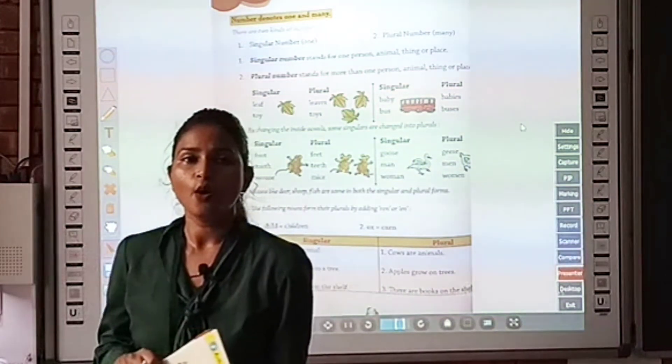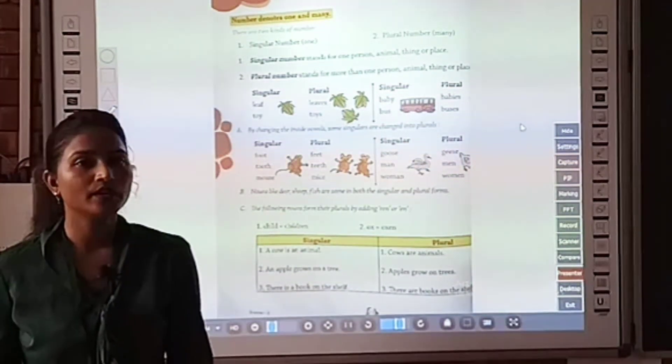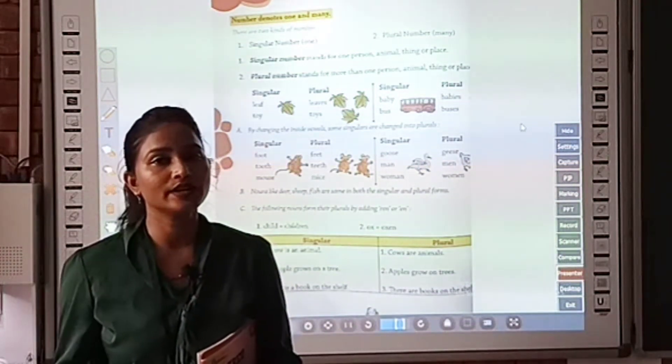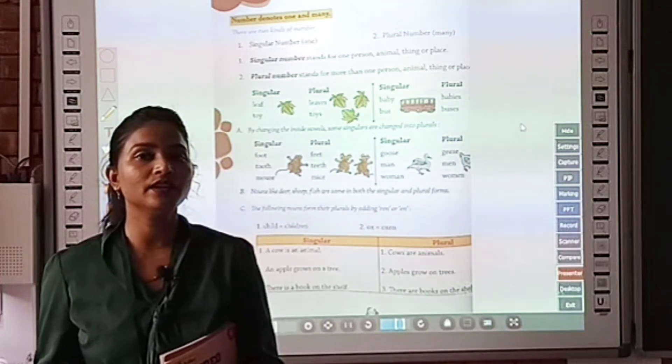So now what is plural number? Plural number stands for more than one person, place, animal or thing.